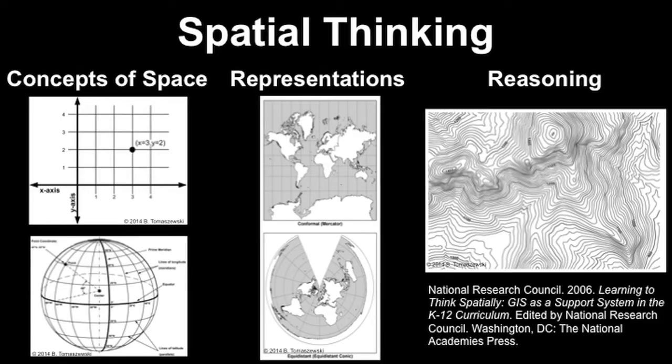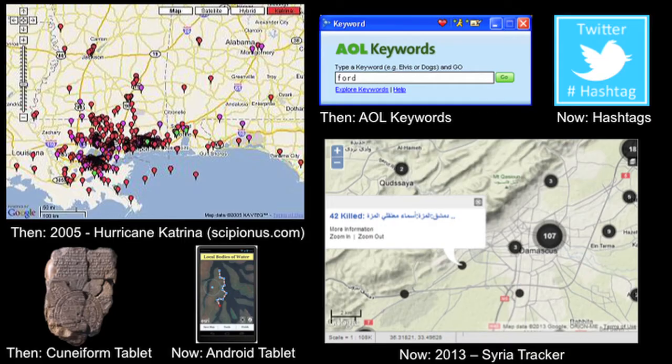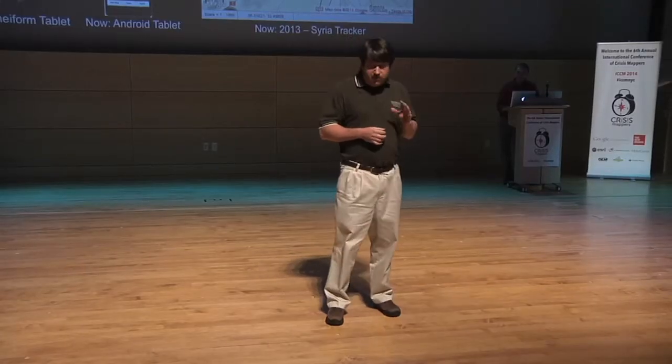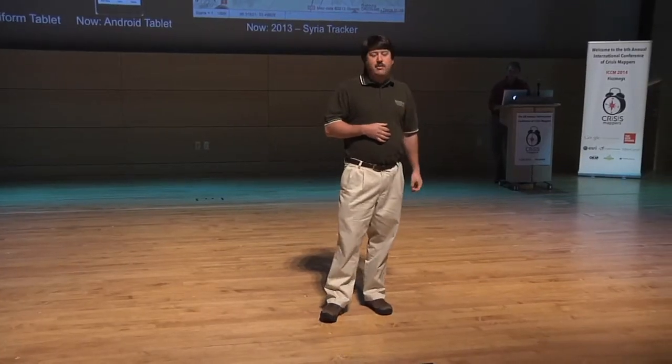I would argue that the whole purpose behind crisis maps, crisis mapping, and many of the technologies and ideas we've heard about today all link back to spatial thinking — using the properties of space to structure, solve, and reason about problems. Various crisis maps, data streams, hashtags, drone platforms, and so forth will come and go, but it is the underlying spatial thinking supported by these items that will persist.